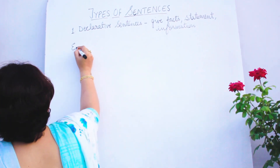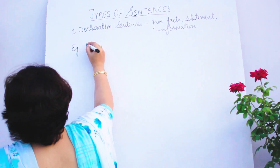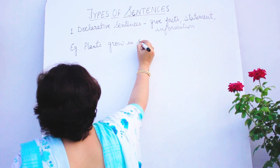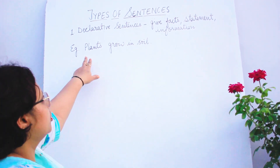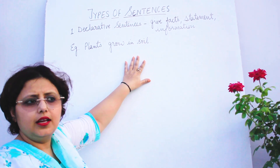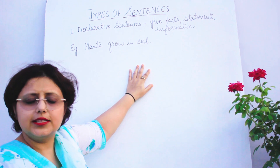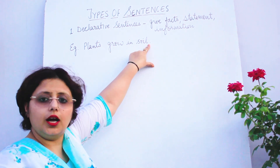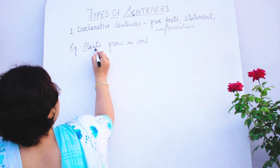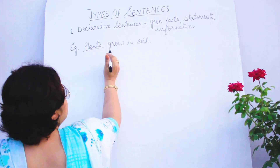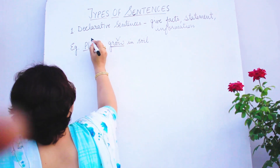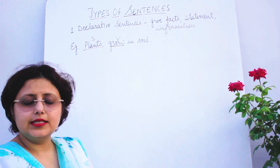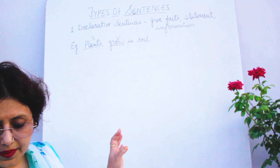Declarative sentences end with a full stop. For example, 'the sun rises in the east' and 'the earth revolves around the sun' are facts, so they are declarative sentences. Another example: 'plants grow in soil' — plants is the subject, grow is the verb. This is a complete sentence ending with a full stop.